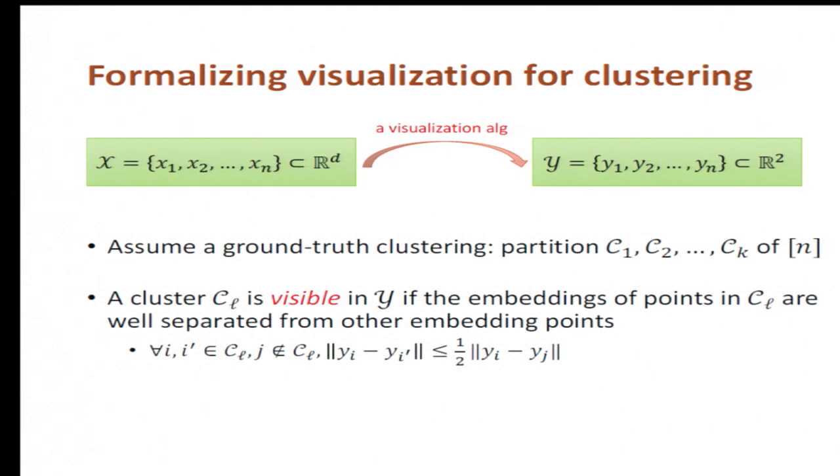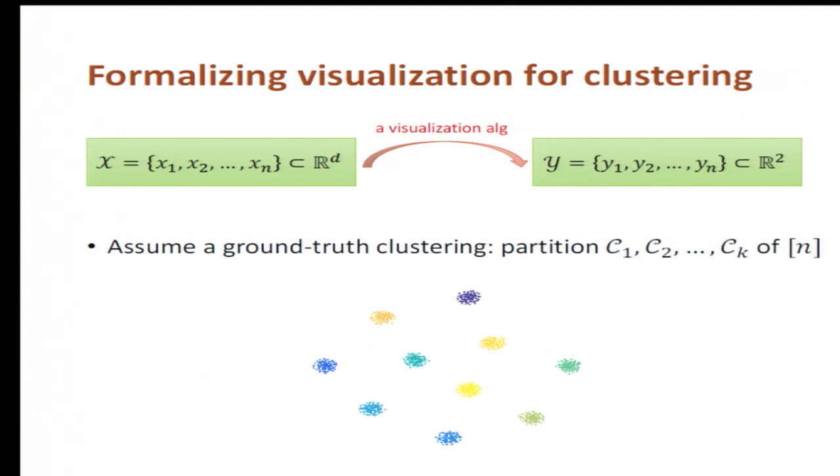We say that a cluster C_l is visible in the embedding if the embeddings of the points in C_l are all well-separated from all other embedding points. We can also easily write down a quantitative version of this definition. And then we say that the embedding is a full visualization of the dataset if all the ground truth clusters are visible.